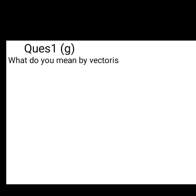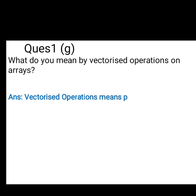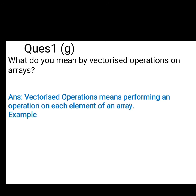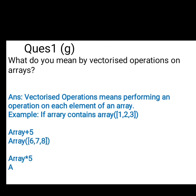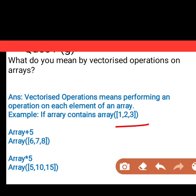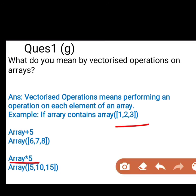Question first part g: What do you mean by vectorized operation on arrays? Students, vectorized operations means operations performed on each element of the array. If the array contains 1, 2, 3, array plus 5 means adding 5 to each element and returning the result 6, 7, 8. Similarly, multiplying it by 5 means 1 multiplied by 5 that is 5, 2 multiplied by 5 that is 10, and 3 multiplied by 5 that is 15.